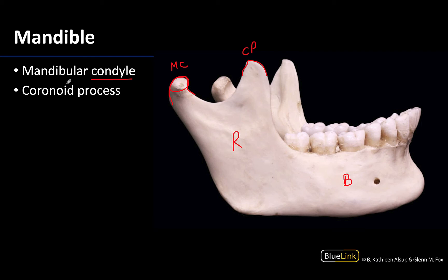The temporalis muscle is mostly located up on the parietal bones and down a little bit into the temporal bones, but it's going to have — as all muscles of mastication will — its distal attachment on the mandible.